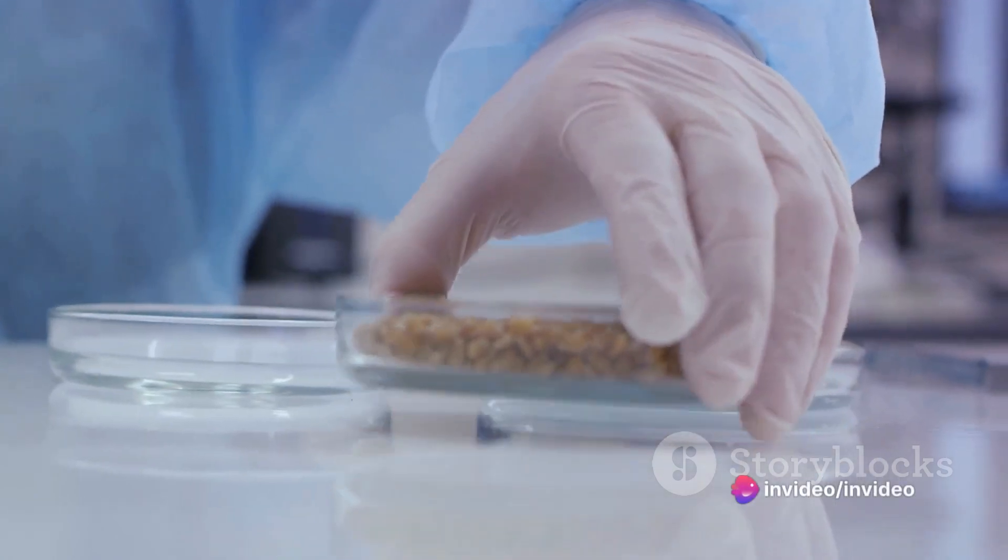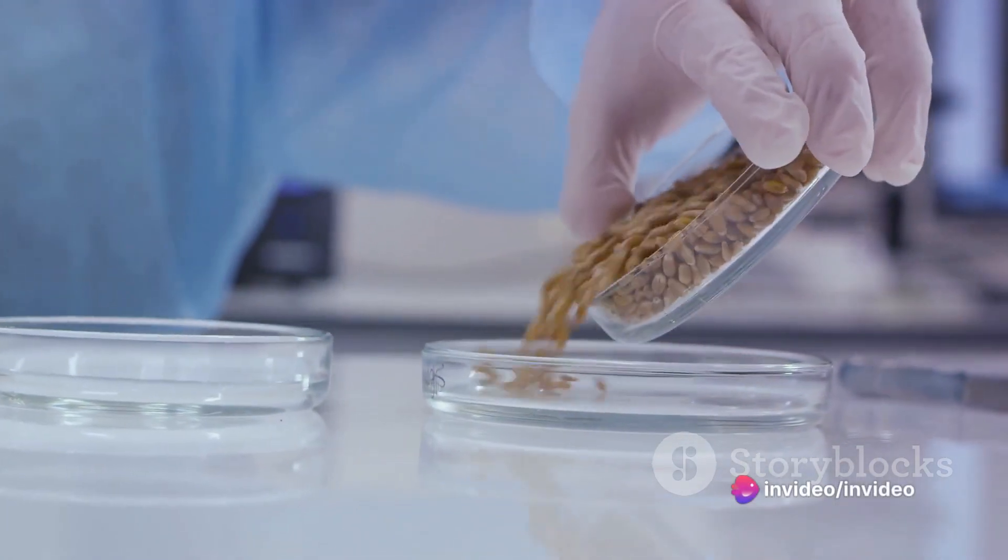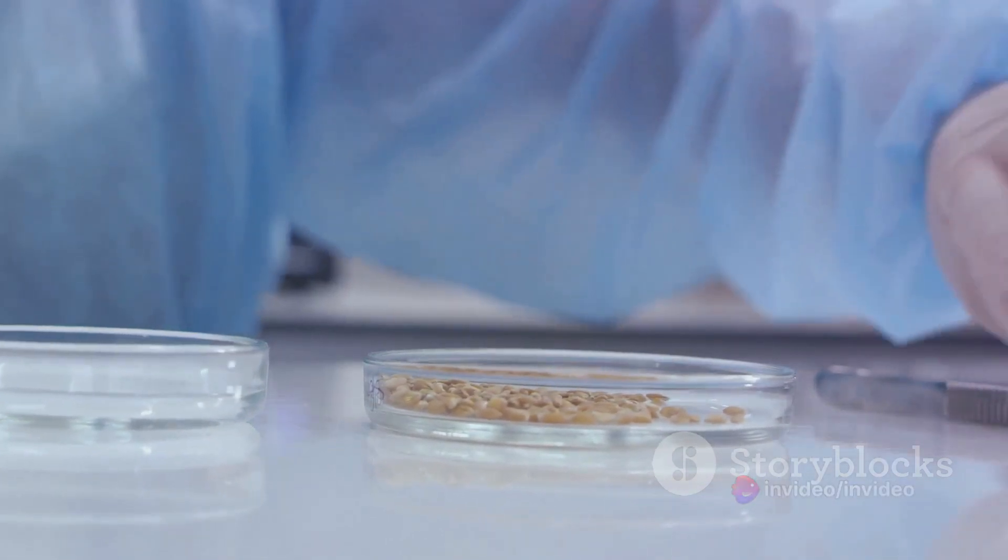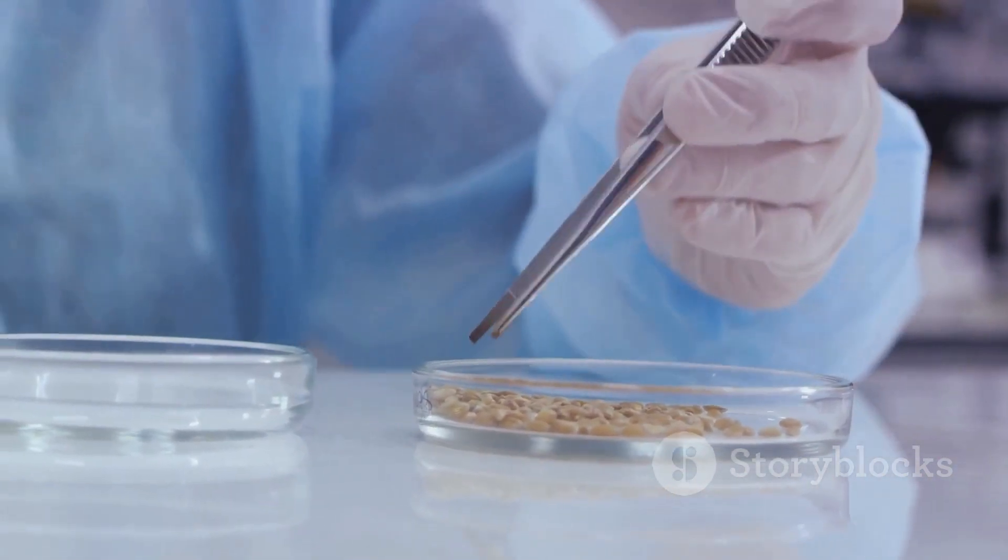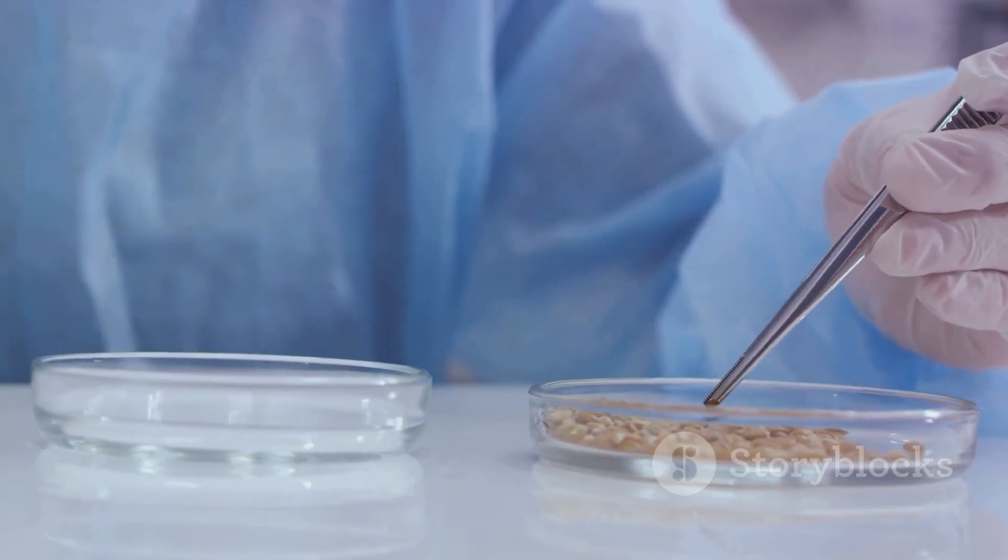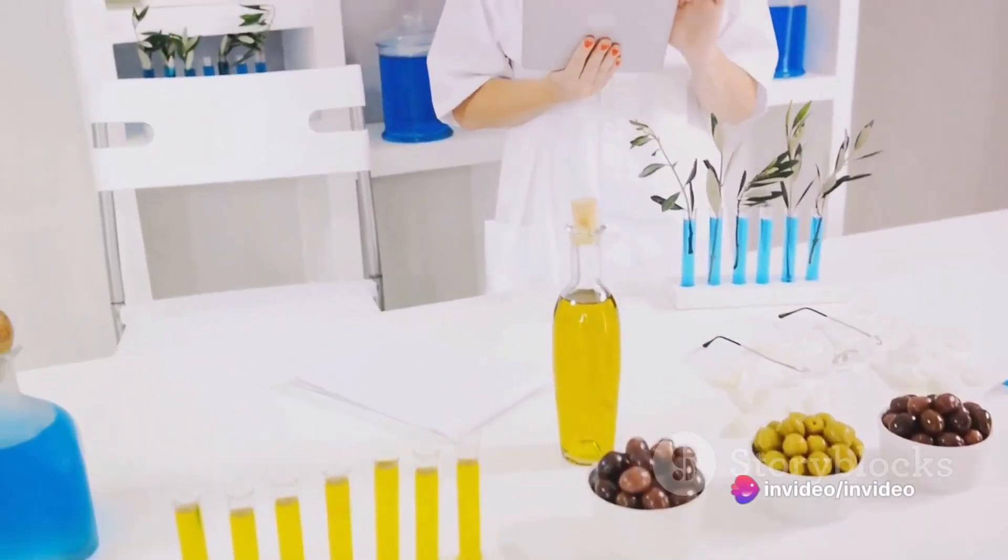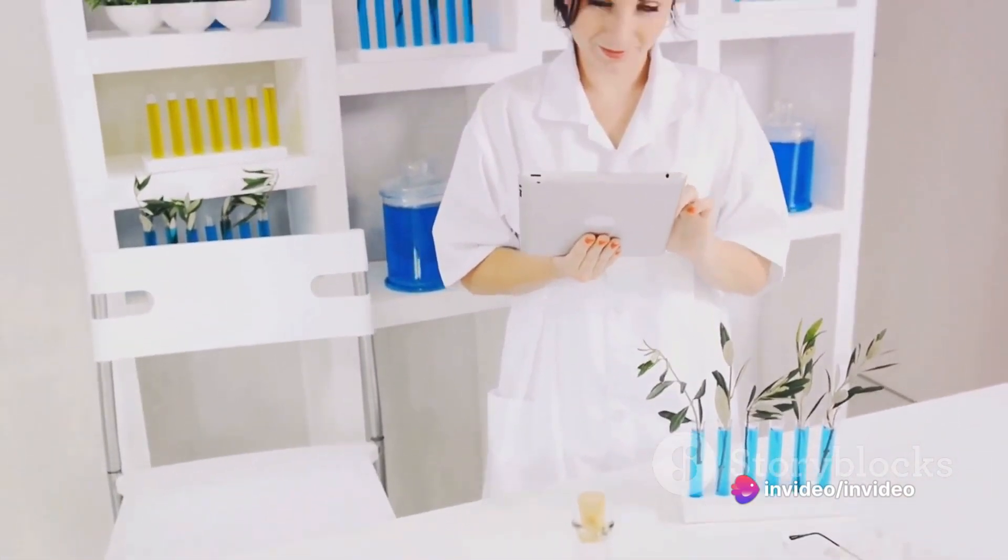The process begins with the separation of water from the food sample. This is done through a process known as drying. The sample is subjected to a certain temperature for a specific period, causing the water to evaporate. The difference in weight before and after drying gives us the moisture content.